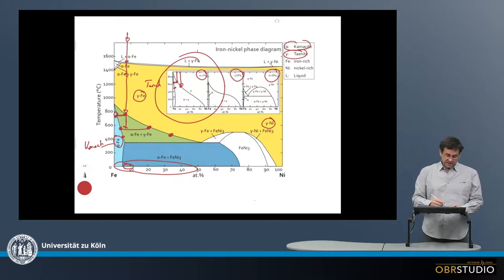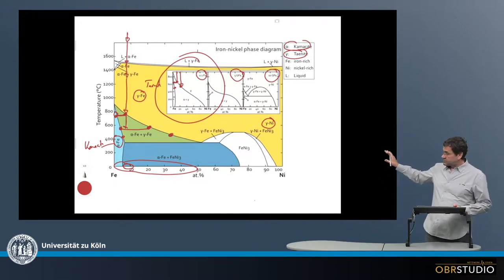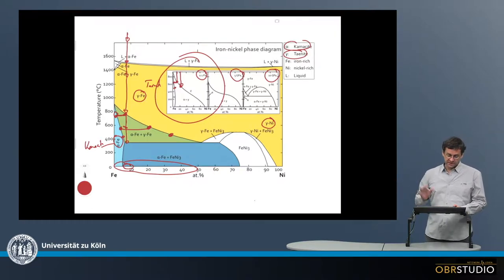As you can see in the large diagram here, there's this darker blue area. In principle, below a certain temperature, something like maybe 360 degrees or so Celsius, there's an additional decomposition.